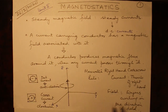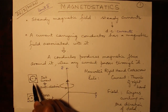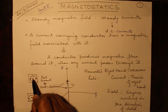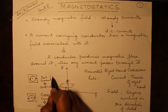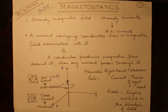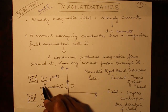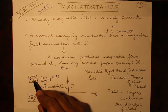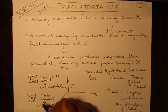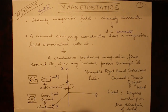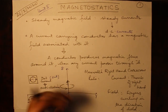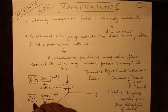If it's a dot current — dot means out, coming out of the paper — then the flux is in the anticlockwise direction. If it's a cross current — cross means into the paper — then the flux is in the clockwise direction.